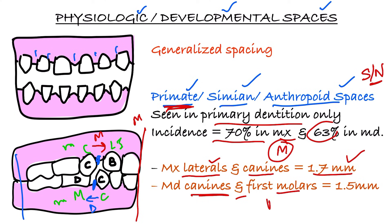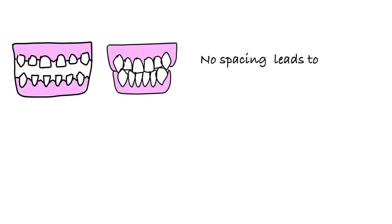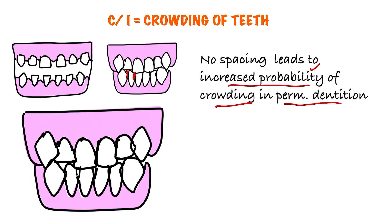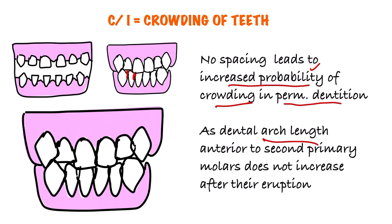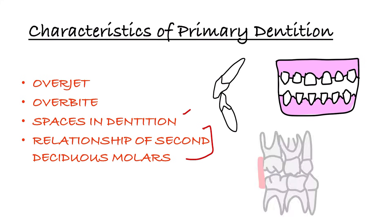Primate spaces are seen only in primary dentition. The incidence is seventy percent in maxilla and sixty-three percent in mandible. In the maxilla the space is 1.7 mm between lateral incisor and canine; in the mandible it is 1.5 mm between canine and first molar. Clinical implication: if these spaces are absent, it leads to crowding of teeth, and increases the chances of crowding of permanent teeth, because permanent anterior teeth need to utilize these spaces as the arch length does not increase anteriorly.